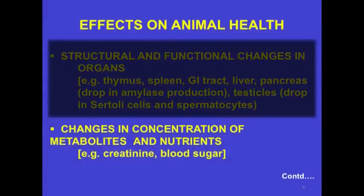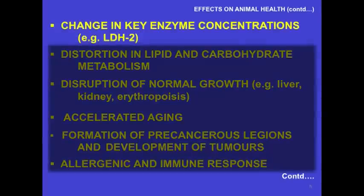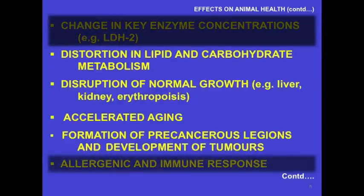There are changes in concentration of metabolites and nutrients—all your proteins, nucleic acids, and fats are made from these. For example, creatinine—used as a marker for liver function—and blood sugar. There are changes in key enzyme concentration, like lactic dehydrogenase isozyme 2, a key enzyme involved in glucose metabolism. There's distortion in lipid and carbohydrate metabolism, and disruption of normal growth of liver, kidney, formation of blood cells—erythropoiesis—and accelerated aging.